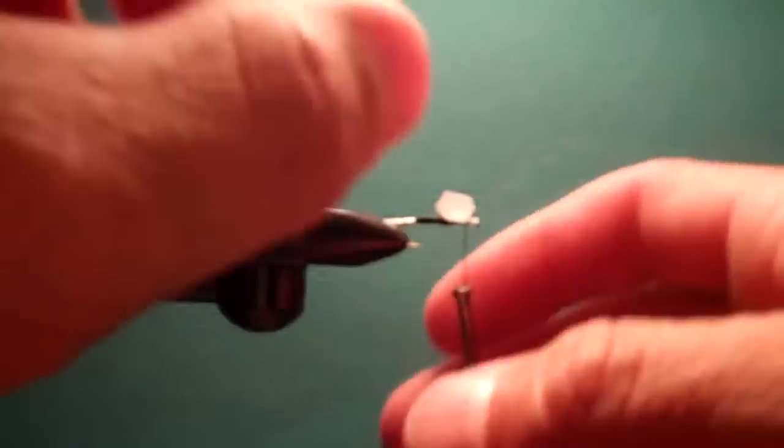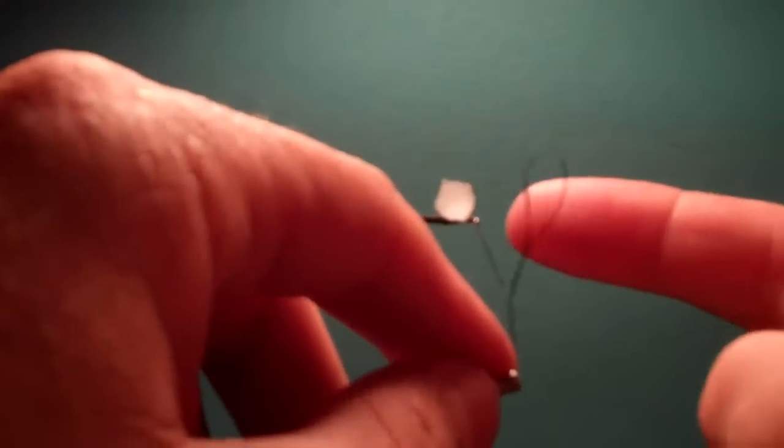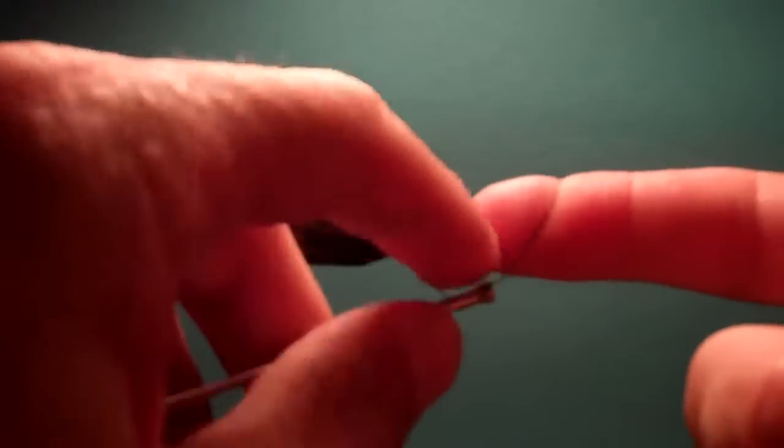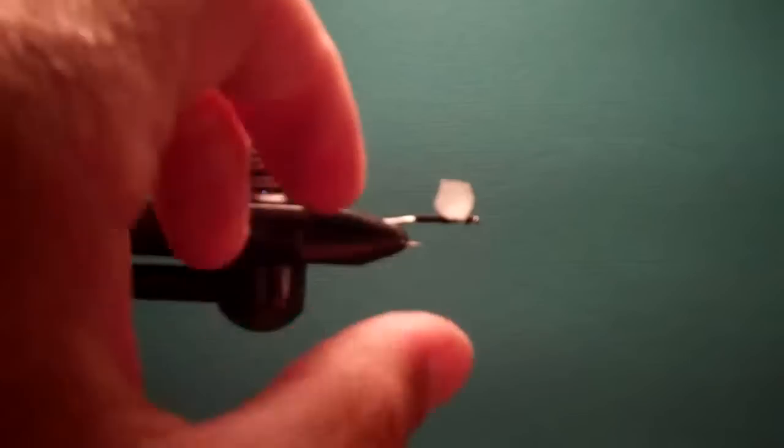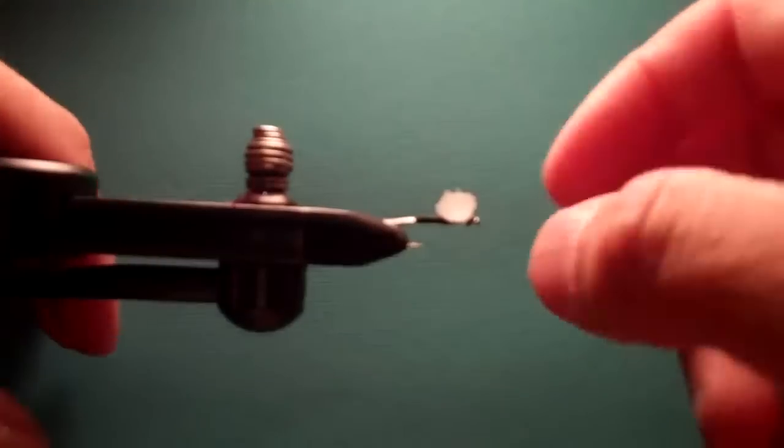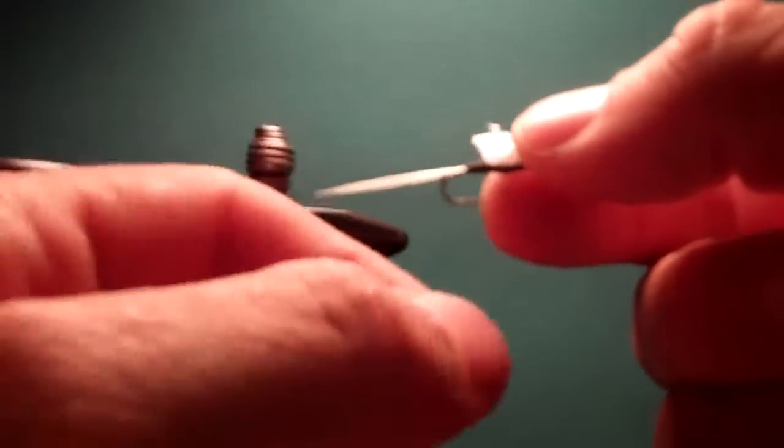And that is the fly right there. I could make the body a little bit bigger, but I don't really need to. I'm going to do a half hitch. Okay, here we go. You can do this for any spinner, sulfurs, whatever. There you have it. There's a black thread-bodied Trico spinner.